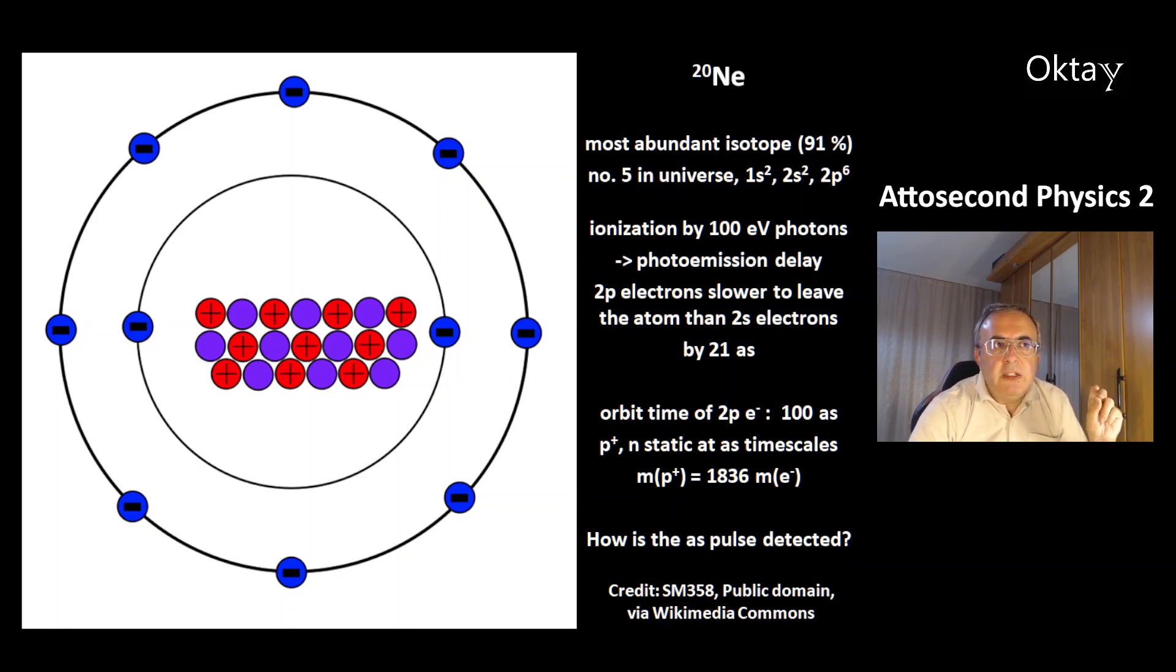It has a full shell of 1s electrons, and the second shell is completely full too. There was an experiment of ionization by 100 electron volt photons. This showed a photoemission delay of the 2p electrons. They were slower to leave the atom compared to the 2s electrons. The difference was 21 attoseconds.